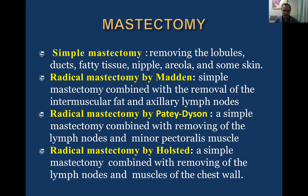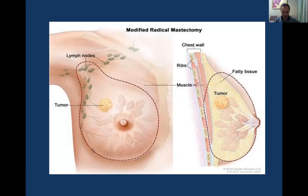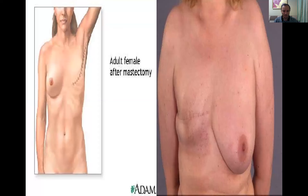Simple mastectomy involves removing the lobes, ducts, fatty tissue, nipple, areola, and some skin of the whole breast. Radical mastectomy by Madden is simple mastectomy combined with removal of the intermuscular fat between major and minor pectoralis muscles and axillary lymph nodes — axillary, subscapular, and subclavicular. Radical mastectomy by Patey-Dyson additionally removes the minor pectoralis muscle. Radical mastectomy by Halsted removes both muscles and everything mentioned before. This shows the removal of the entire breast and regional lymph nodes.